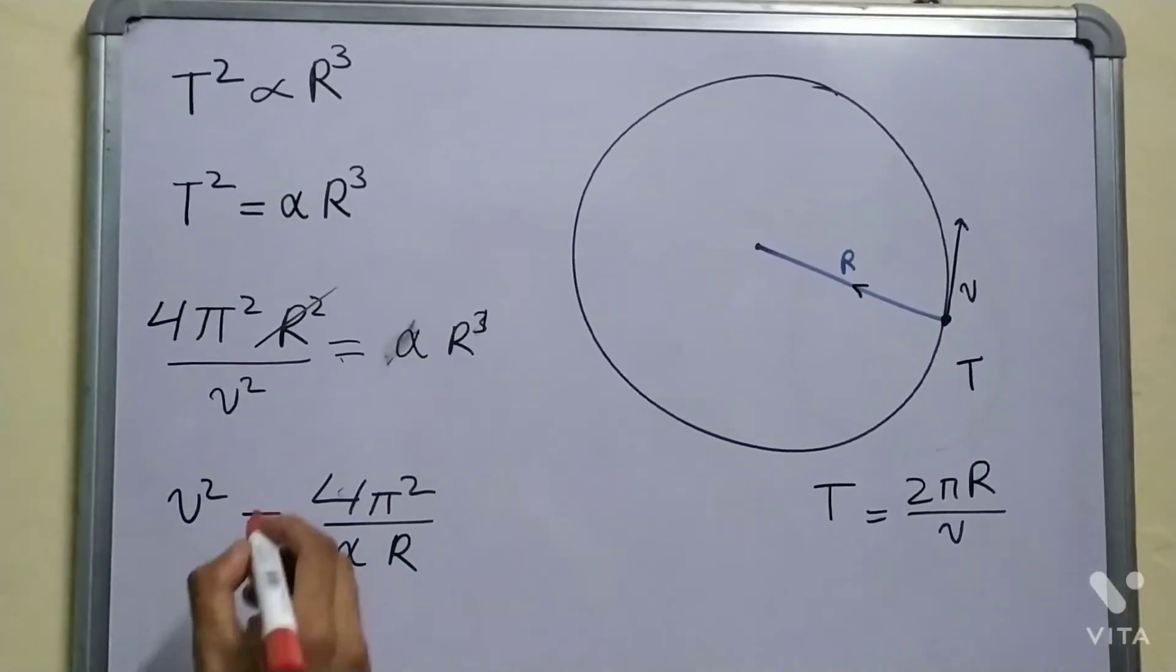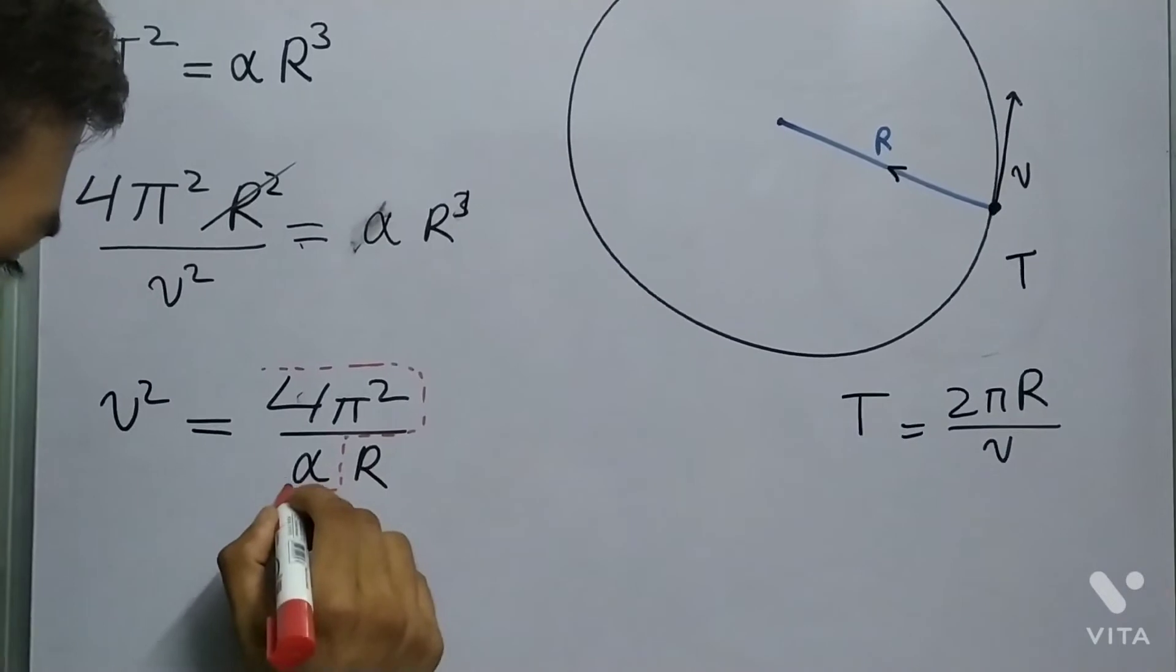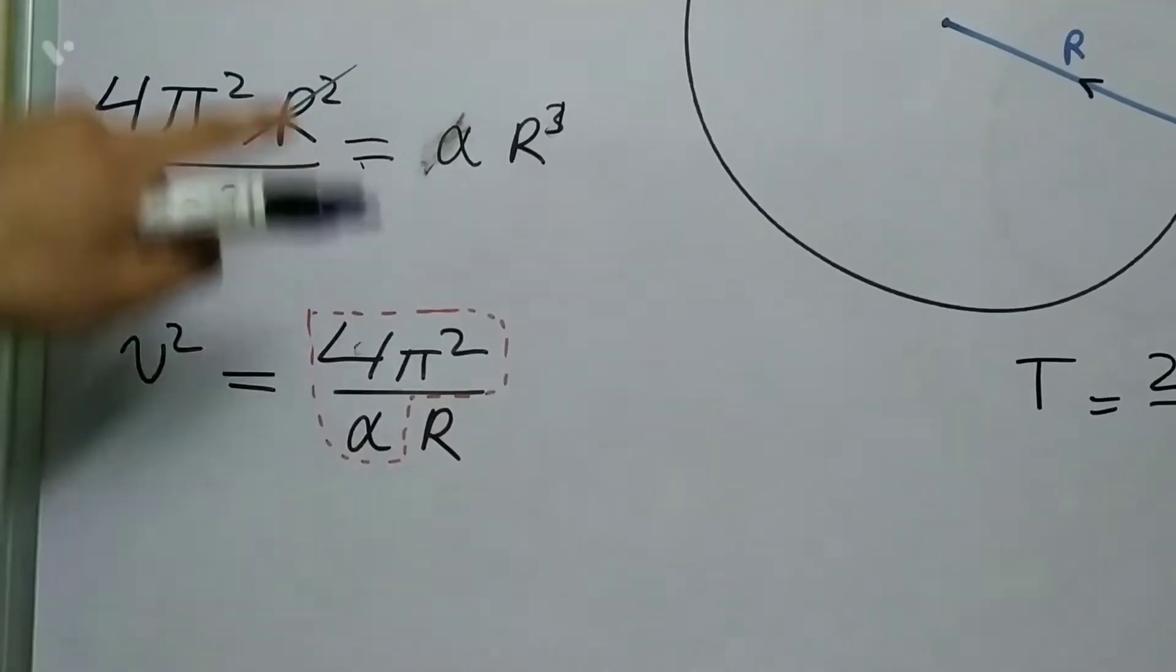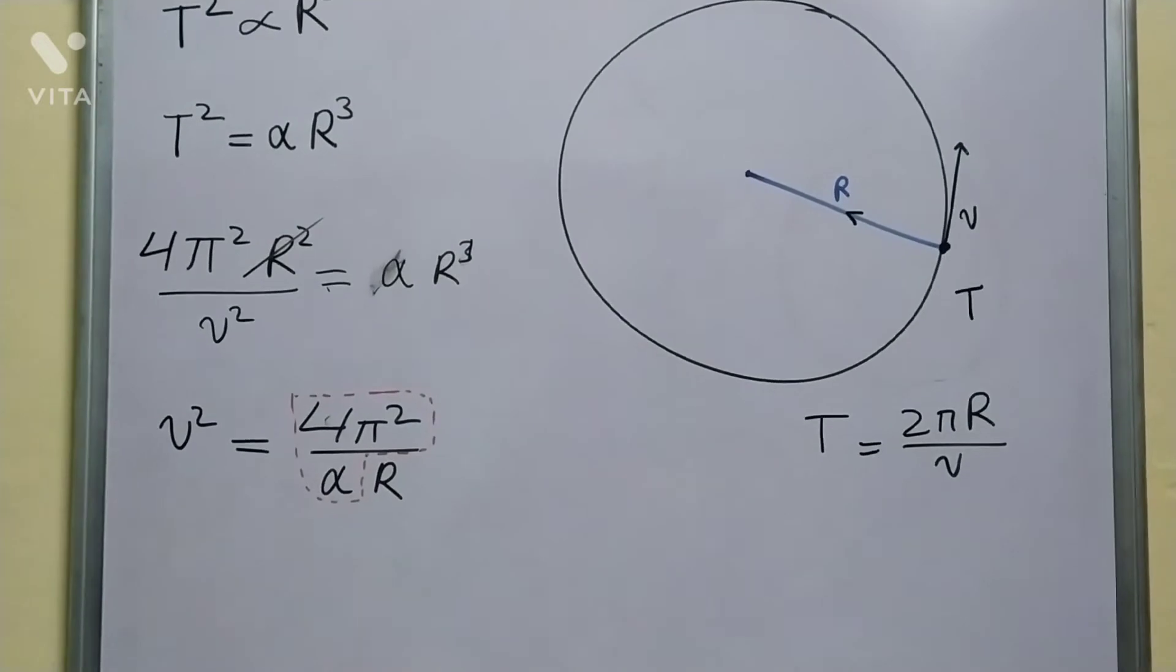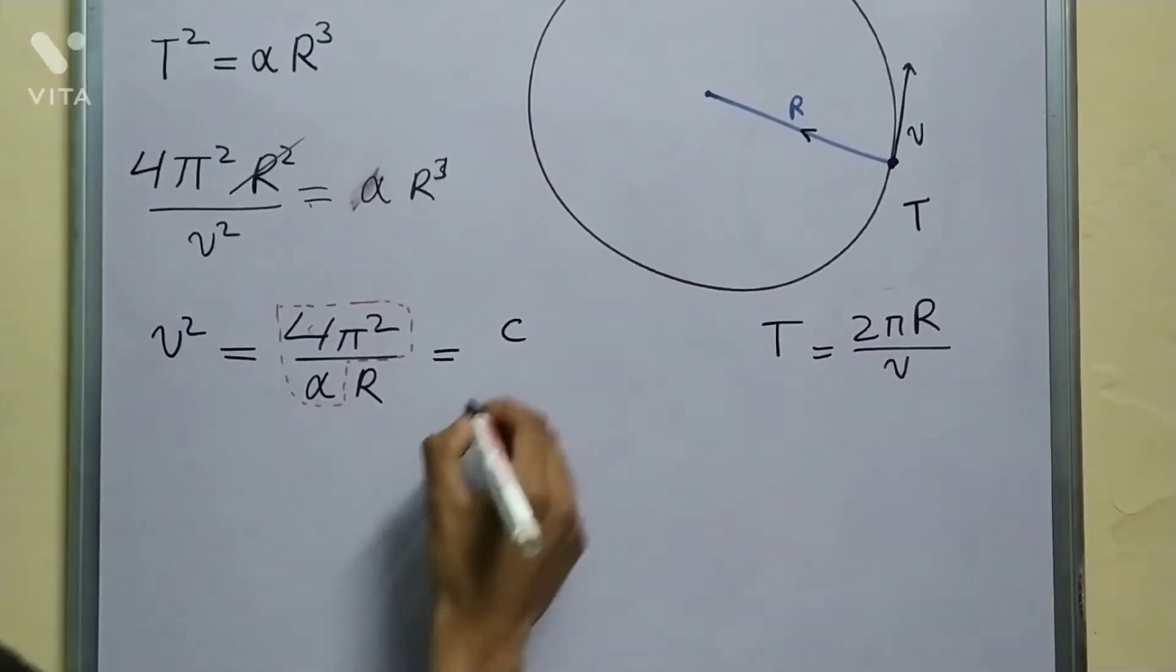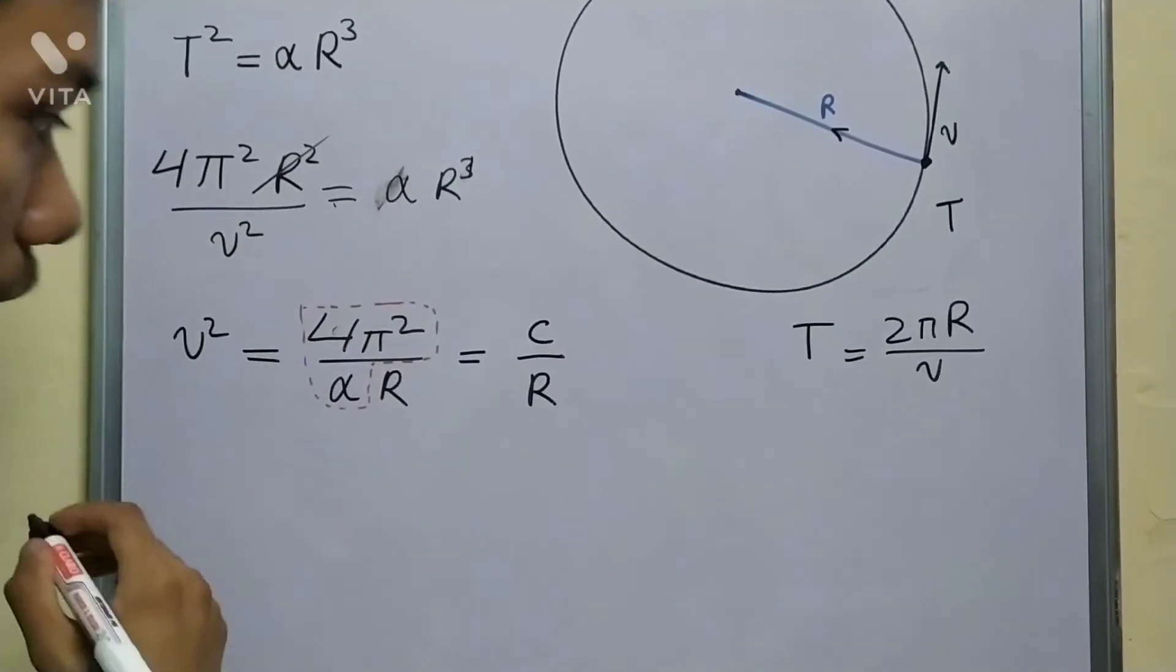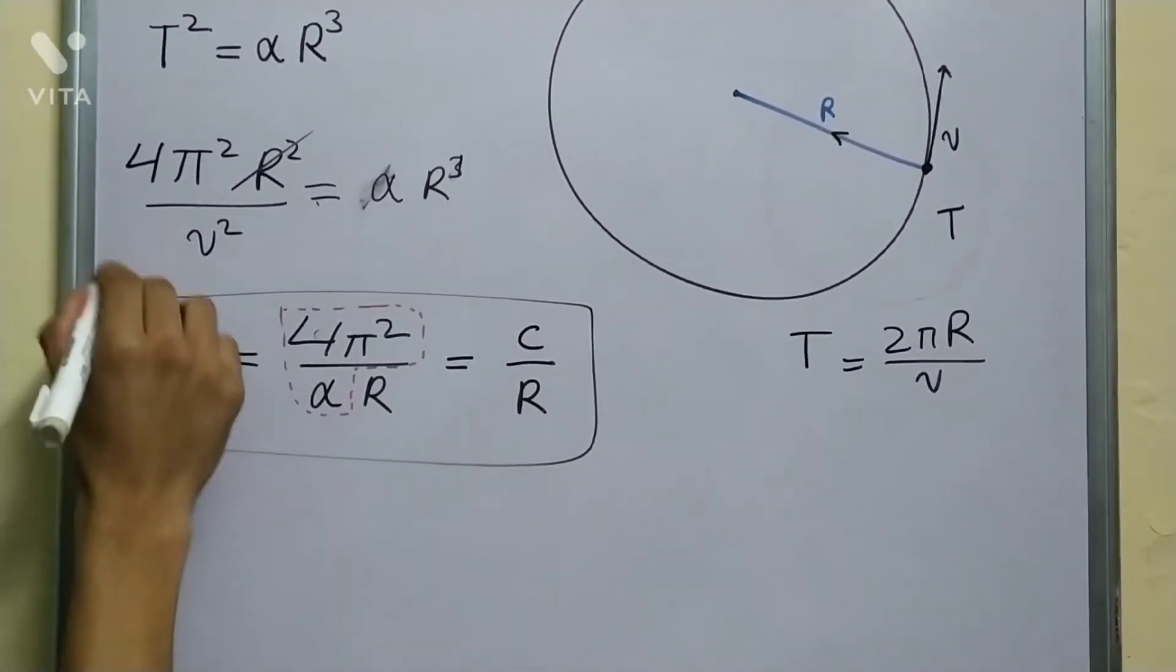Now this thing is a constant—4 is a constant, π is a constant, and alpha is a constant from Kepler's second law. So we can say that v² is equal to some constant c upon r. The dependence is important: v² is inversely proportional to r. So now we get this relation which is very useful.